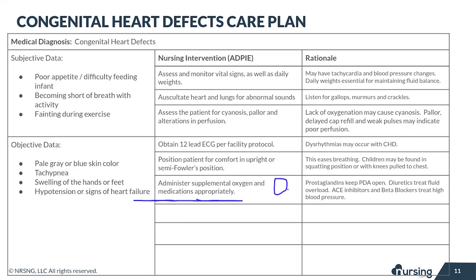Oxygen is very commonly given to children with congenital heart defects if they are cyanotic. Other medications to consider are prostaglandins, diuretics, ACE inhibitors, and beta blockers. Prostaglandins are given when the PDA — patent ductus arteriosus — needs to remain open to allow blood to mix. Diuretics are given to treat fluid overload, and ACE inhibitors and beta blockers are given to treat high blood pressure.